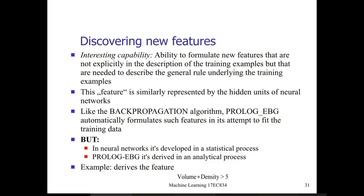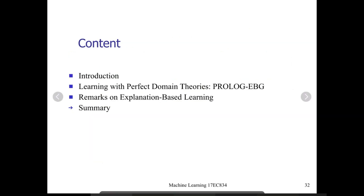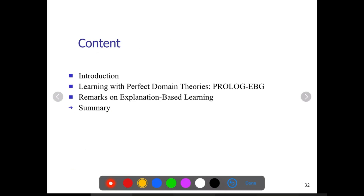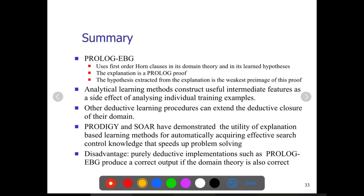Now coming to the summary of analytical learning. One important thing is we have used first-order Horn clauses in the domain theory, and we have learned the hypothesis explanation using a Prolog proof algorithm. The hypothesis expressed is obtained by identifying the weakest preimage of this proof. Analytical methods are capable of identifying important features.